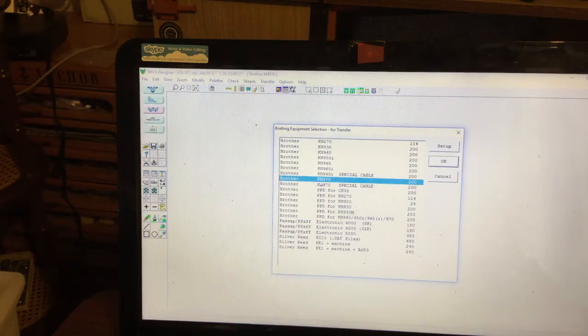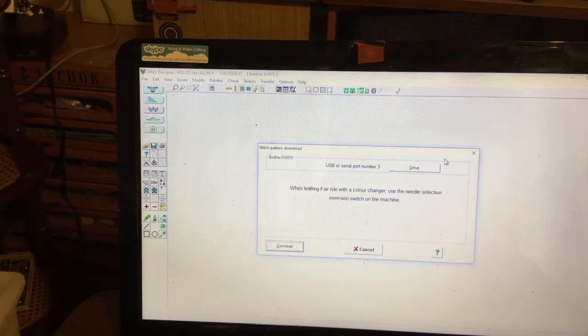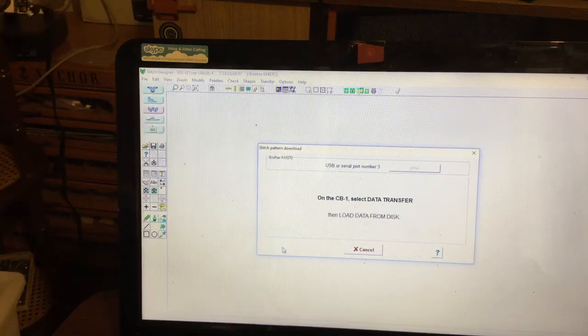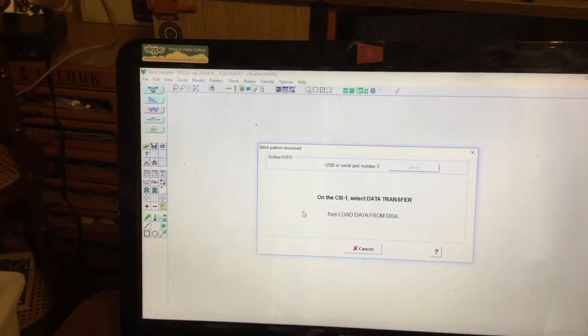Ensure that it says Brother 970, click OK, and then download. You can see it says on the CB1: select data transfer, then load data from disk.